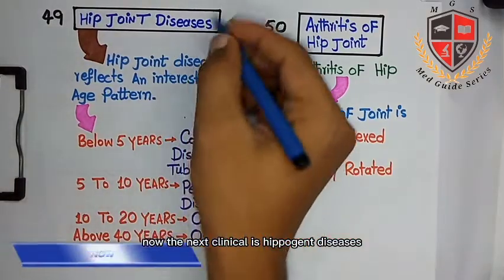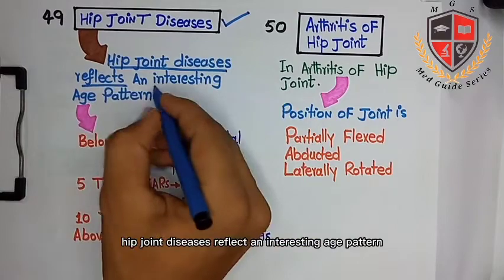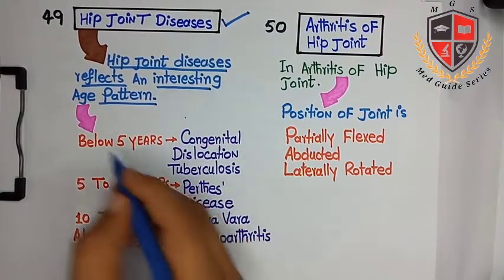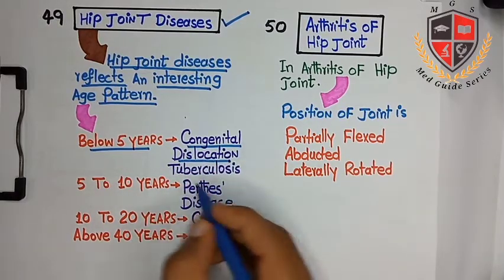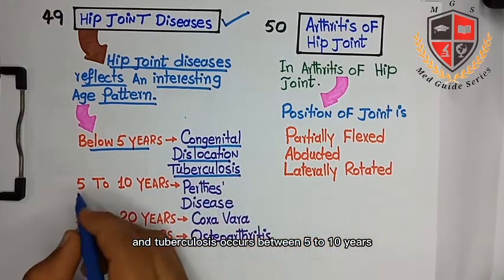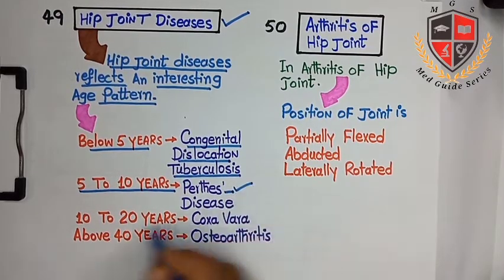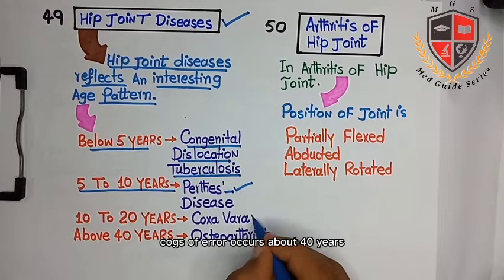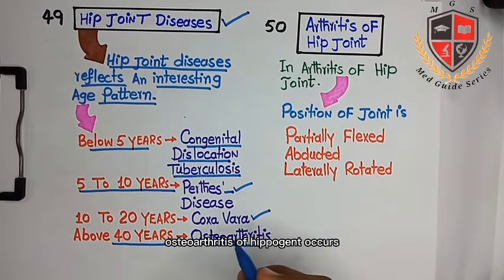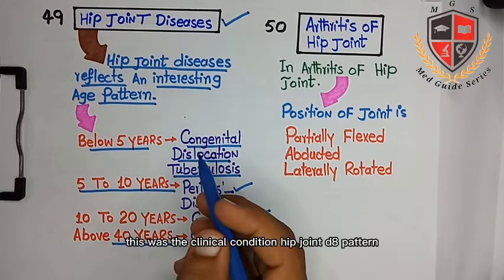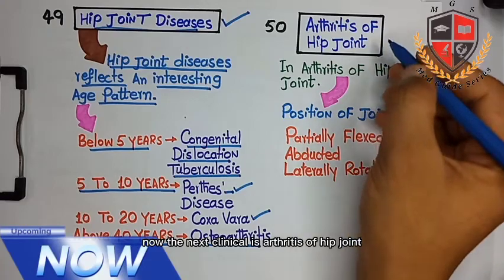The next clinical is hip joint diseases. Hip joint diseases reflect an interesting age pattern: below five years there occurs congenital dislocation of hip joint and tuberculosis. Between five to ten years, Perthes disease occurs. Between ten to twenty years, coxa vara occurs. Above forty years, osteoarthritis of hip joint occurs.